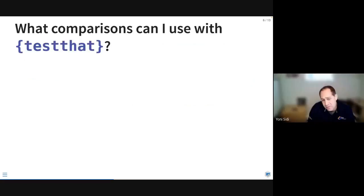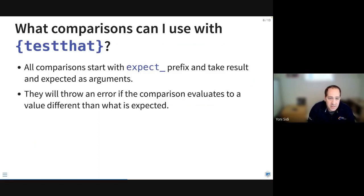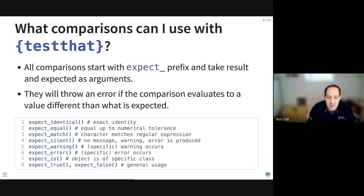What kind of comparisons can we use other than expect_identical? All comparisons start with the expect_ prefix and take the result and expected as arguments. An error will be given if the comparison evaluates to something different than what was expected. There are many different expectations available — you can even expect an error, which sounds counterintuitive, but sometimes functions are designed to error out and we want to be able to test for that. This is used in a lot of packages.